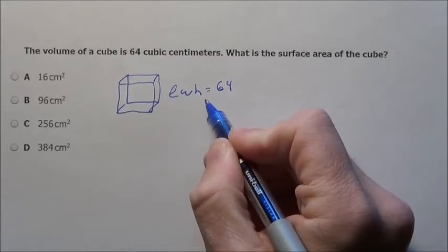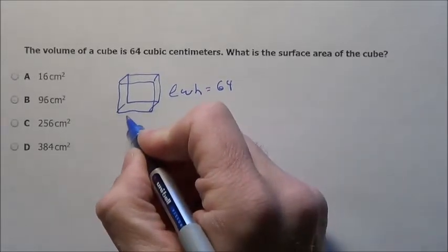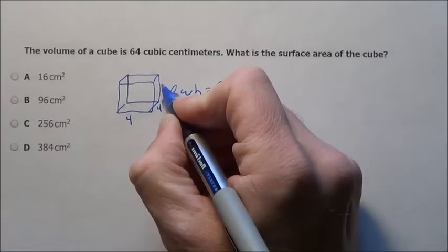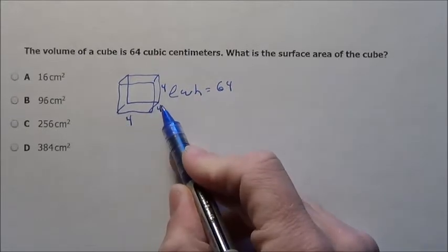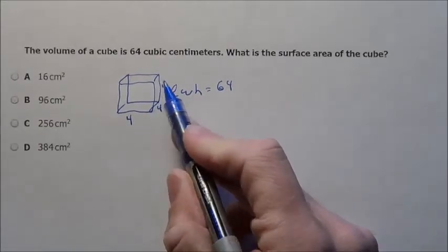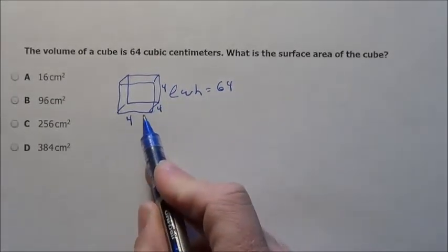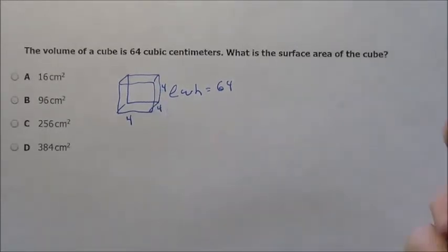So what number multiplied by itself gives me 64? I know that means the cube root of that. Each of those was 4, because 4 times 4 is 16, times 4 is 64. So I know it's 4 by 4 by 4, that's what the cube is.